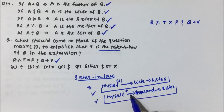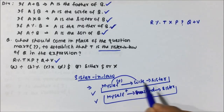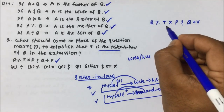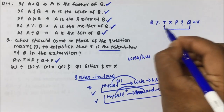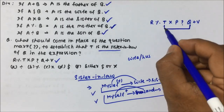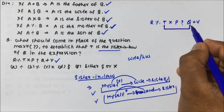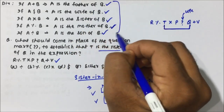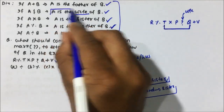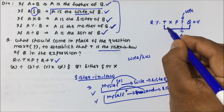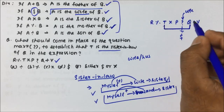So at the question mark, either a husband or wife relation should come. Only then will T be the sister-in-law of Q. Looking at the given data, there is no husband symbol — only wife, represented by dollar. So if we place the dollar sign here, P becomes the wife of Q.